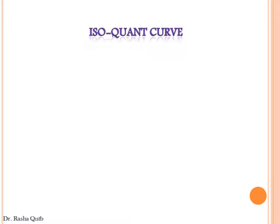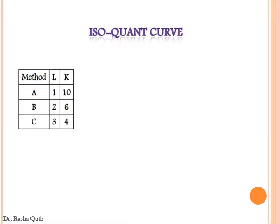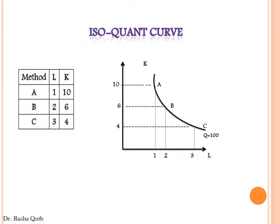In the long run, all factors of production are variable, so in order to produce a certain level of output, the producer needs different combinations of labor and capital. This is the concept of the isoquant curve — a curve that shows different combinations of inputs that produce the same level of output. Given data about various combinations of labor and capital, points A, B, and C are different methods of production that all produce the same level of output, Q equals 100 units.